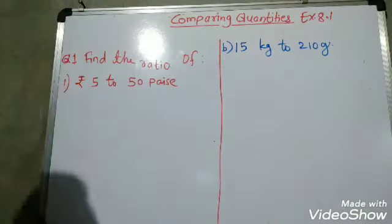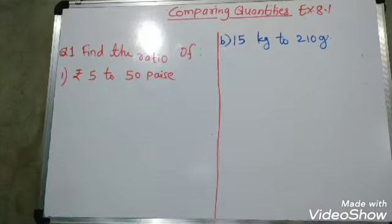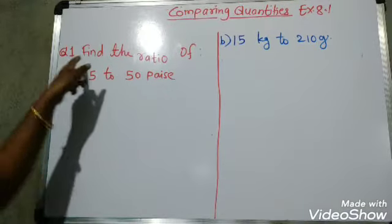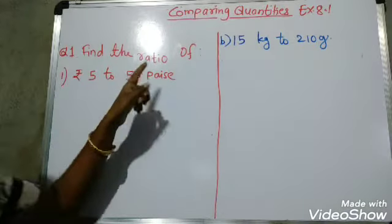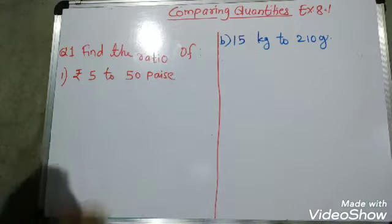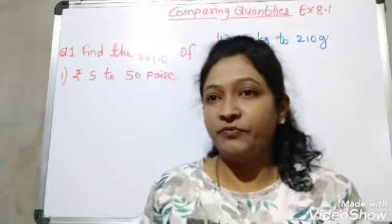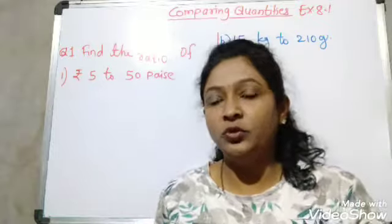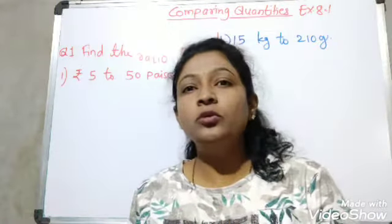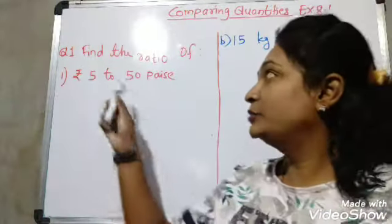So what is our first question? Our first question is: find the ratio of rupees 5 to 50 paise. Now see students, whenever we are finding the ratio, the two quantities should be in the same unit.